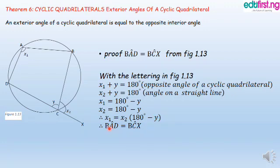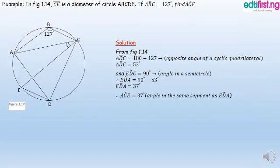Therefore, X1 equals X2, which is 180 degrees minus Y. Therefore, angle BAD equals angle BCX, which is X1 equals X2, both equal to 180 minus Y. This completes the proof of Theorem 6.